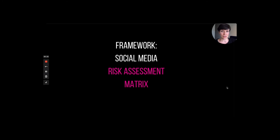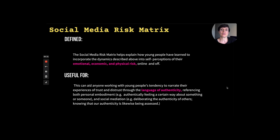The last framework is a risk assessment matrix. This might help explain how young people have learned to incorporate dynamics like the spread of misinformation into self-perceptions of their emotional, economic, and physical risks online and off. It's useful for anyone working with young people's tendencies to narrate experiences of trust and distrust through languages of authenticity — referencing personal embodiment, deliberating the authenticity of others, and knowing that one's own authenticity is also being assessed.